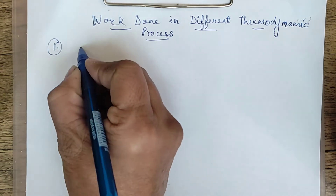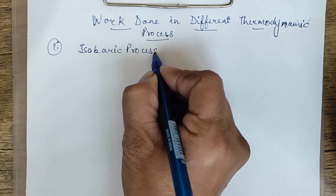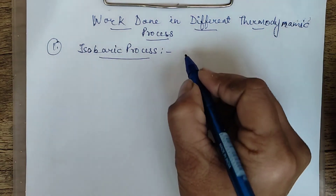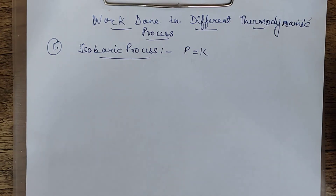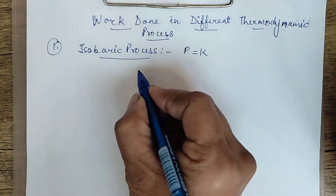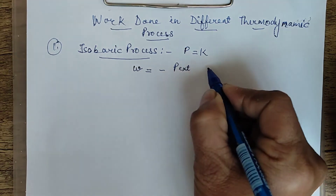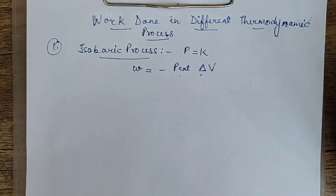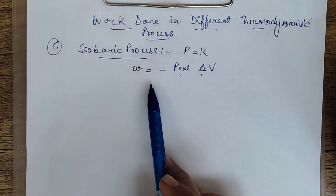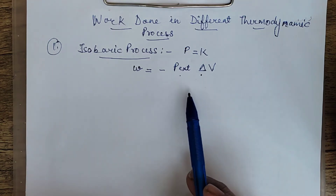First we are taking isobaric process. Isobaric process is that process in which the pressure remains constant — P is constant. We are trying to find out the work done at constant pressure. We know the formula for work done is W = -P_external × ΔV. Whenever pressure is not changing, we use this formula to calculate work done, whether it is expansion or contraction.